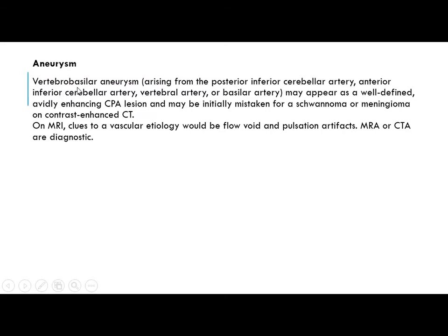Aneurysm: vertebrobasilar aneurysm arising from the posterior inferior cerebellar artery, anterior inferior cerebellar artery, vertebral artery, or basilar artery may present as a well-defined enhancing CP angle lesion and may be initially mistaken for schwannoma or meningioma on contrast CT. On MRI, a clue is the flow void and pulsation artifact. Definitive diagnosis is by MR angiography or CT angiography.